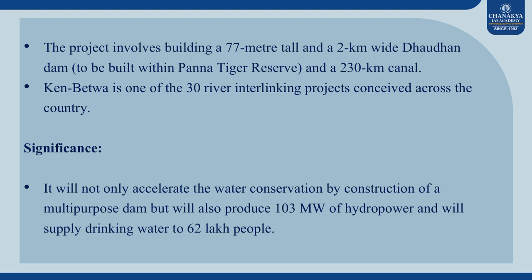Ken Betwa is one of the 30 river interlinking projects conceived across the country. It will not only accelerate water conservation by construction of a multipurpose dam but will also produce 103 MW of hydropower and will supply drinking water to 62 lakh people.